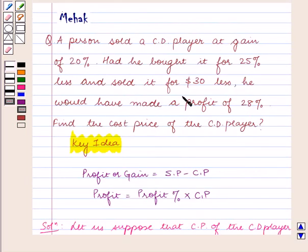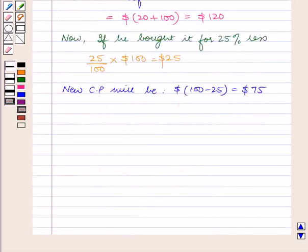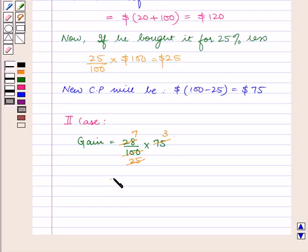Now, in the second case, he made a profit of 28%. So in the second case, gain equals 28/100 × 75, which equals $21.